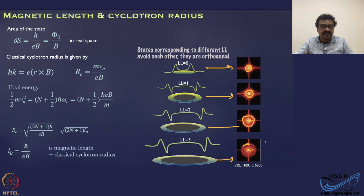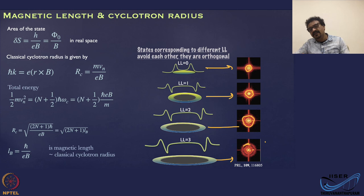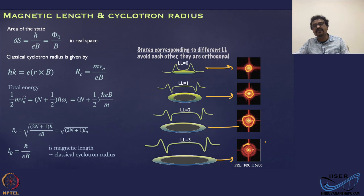So far we have covered the number of states in Landau levels, the filling factor, the magnetic length, and oscillations in physical properties as a function of B field. In the next lecture, we will address the transport characteristics directly — the quantum Hall effect — and also revisit the Shubnikov-de Haas oscillations.